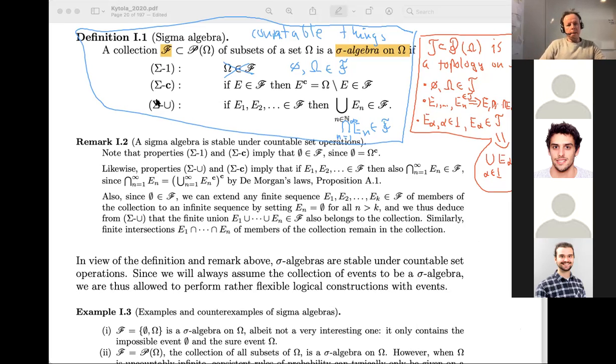So also one naming is that, what are these members called? So the members of this collection, they are called measurable sets. What are the members of topology called? In the topology, what are the members called? They are called open sets. So if you say measurable, you are referring to some sigma algebra. If you say open, you are referring to some topology.